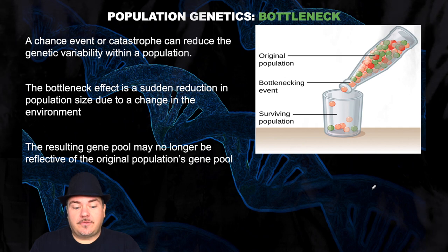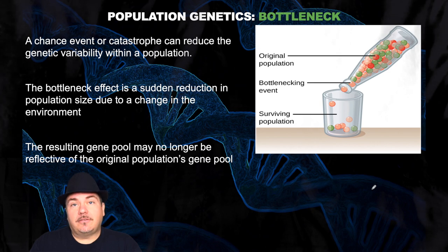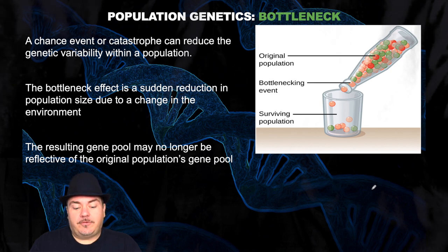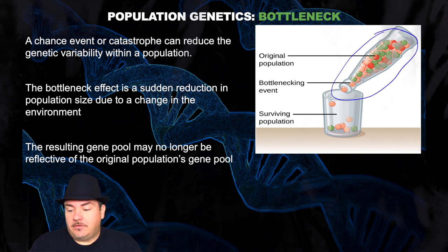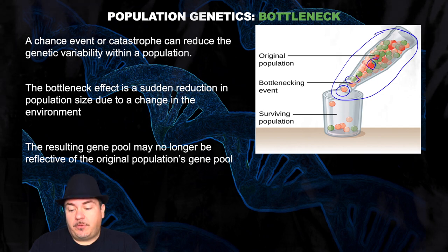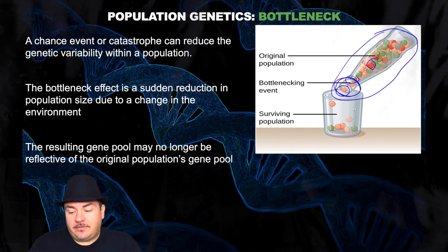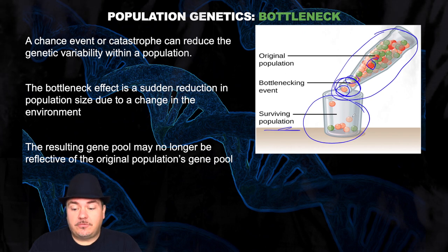Another example is the bottleneck effect. A chance event or catastrophe can reduce the genetic variability within a population. The bottleneck effect is a sudden reduction in population size due to a change in the environment. The resulting gene pool may no longer be reflective of the original population's gene pool. It's called the bottleneck effect because the best way to understand it is like thinking of a bottle. In this bottle there are beads inside it with a variety of different phenotypes — some pale orange, some green, some red. When you pour them out into a cup, only a few can fit through the bottleneck — the neck of the bottle. And just by chance, none of the red ones happen to come out in the surviving population. So you get a change in the phenotype of the population due to this bottleneck effect.